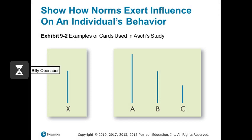Group norms are really important in our organizations because they have a strong influence on behavior. Norms can influence how we conform to different things — they can lead us to conform to ideas that are not correct. This is illustrated in the experiments of Solomon Asch. Asch had group exercises with people in groups of seven to eight. They got cards like the ones on screen and were asked to participate in matching exercises.